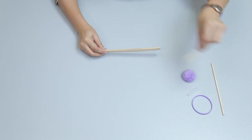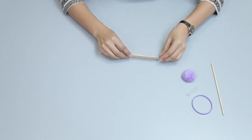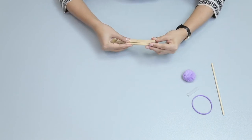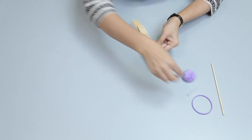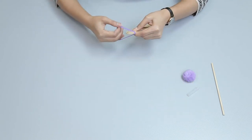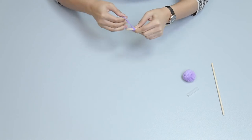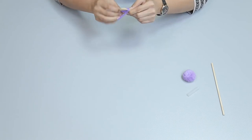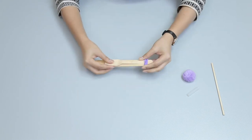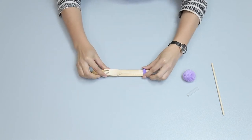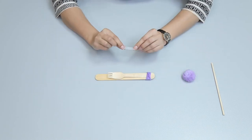Join the craft sticks and spoke together, and bind their ends with the rubber band. After that, fix the silicon tubing piece vertically between the spoke and the craft stick.